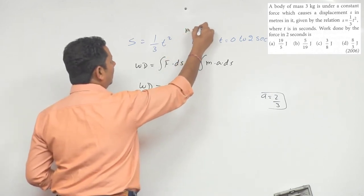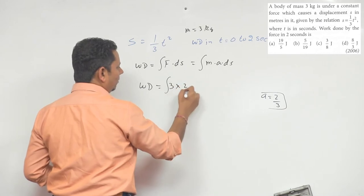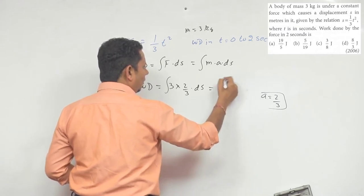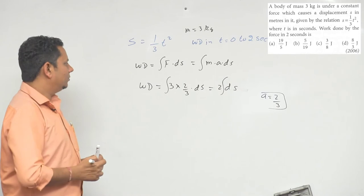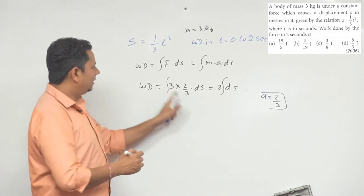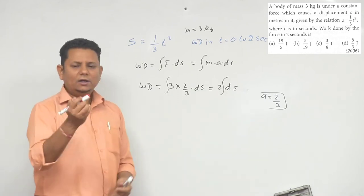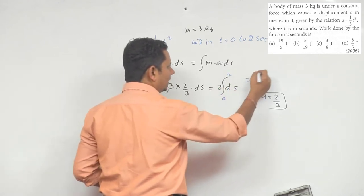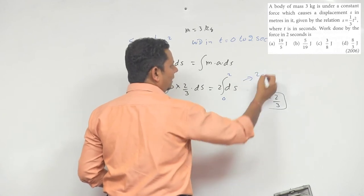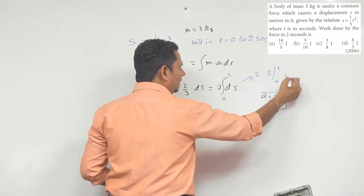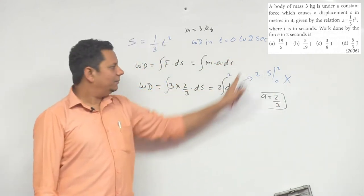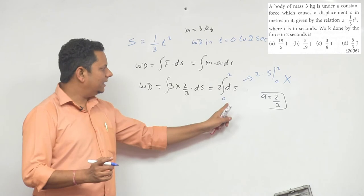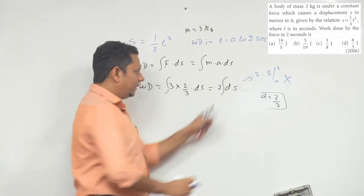So it will be integration of 3 multiplied by (2/3) multiplied by ds, which gives integration of 2ds. Many students make the mistake here - they put the time limit 0 to 2 seconds directly and integrate. This approach is wrong because the limit that comes is the limit of s, not time, which we cannot put directly.